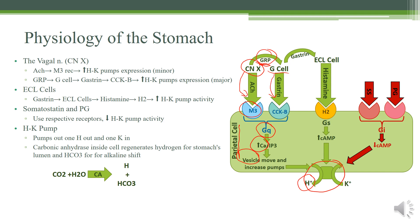Gastrin has an even stronger effect on parietal cells through the CCKB receptor, and that causes even more calcium and IP3 to build up, and more vesicles to be moved to the lumen, and more pumps to be present. But we need to find a way to activate those pumps, and that's the indirect effect of the G-cells. It'll release gastrin, and instead of going directly to the parietal cells, it'll go to the ECL cells. These ECL cells will then release histamine.